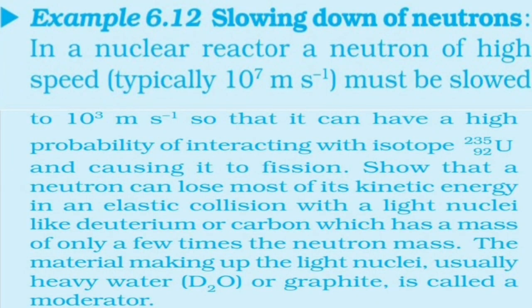Now we have Example 6-12: Slowing down of neutrons. In a nuclear reactor, a neutron of high speed (typically 10⁷ m/s) must be slowed to 10³ m/s so that it can have a high probability of interacting with isotope uranium-235 and causing it to fission. The neutron can lose most of its kinetic energy in an elastic collision with light nuclei like deuterium or carbon. The material making up the light nuclei — usually heavy water or graphite — is called a moderator.